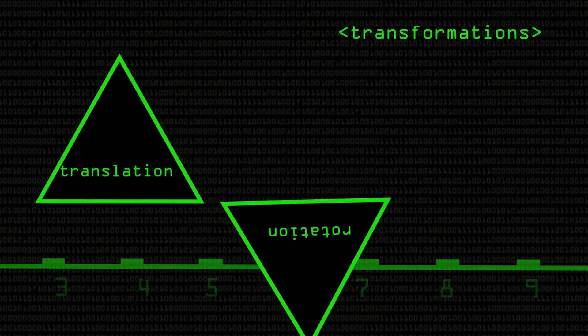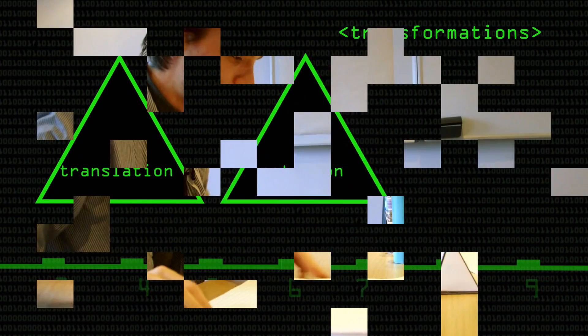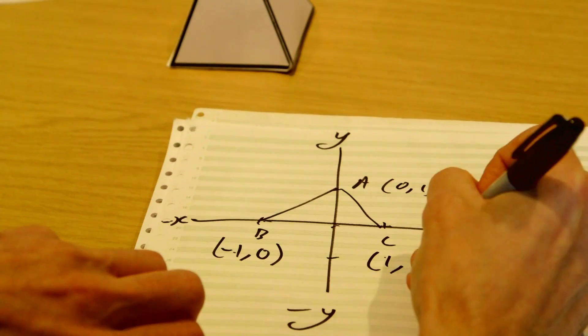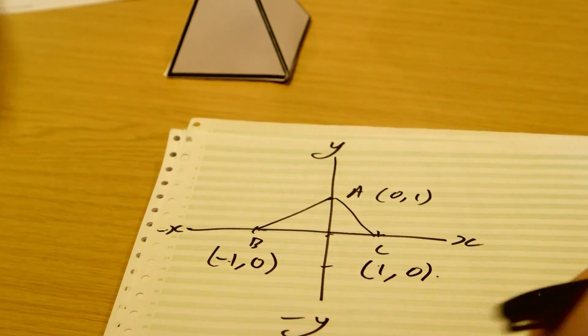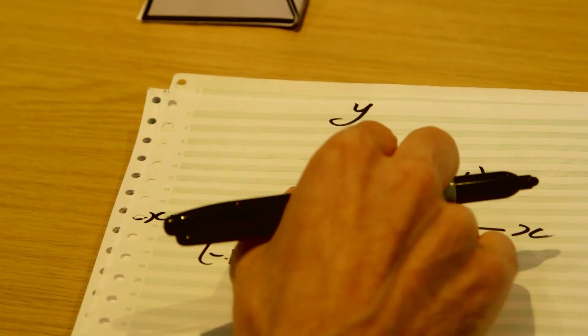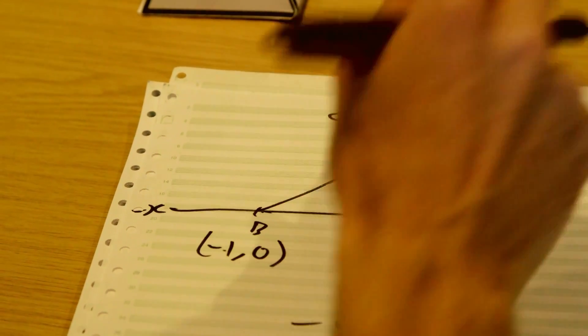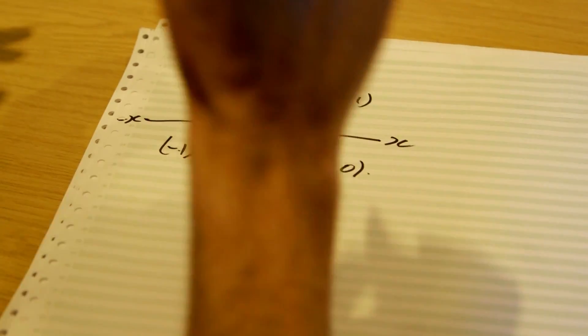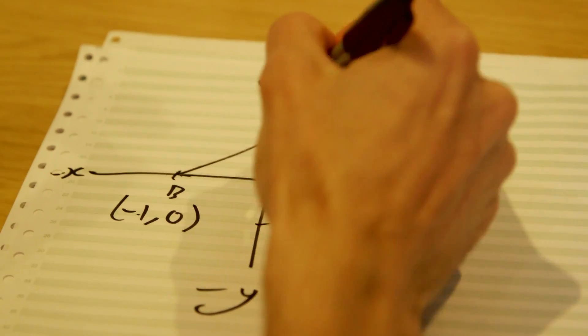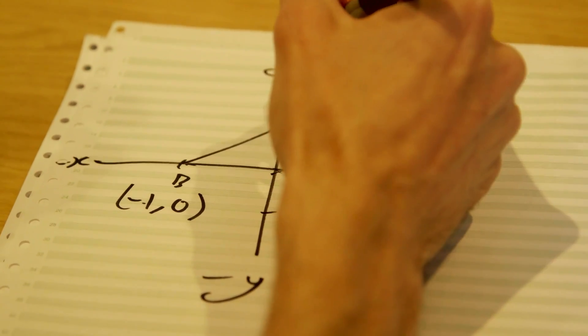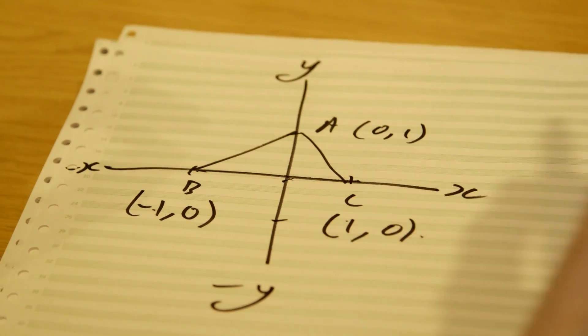We'll start with scaling. Let's draw a triangle — we'll keep it 2D for simplicity's sake. We want to scale our triangle, and everything that's applicable in two dimensions will also work in three dimensions. For now, let's work on scaling. We want to scale it vertically.